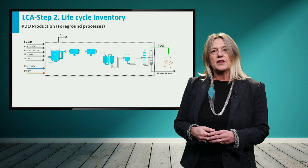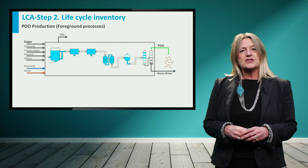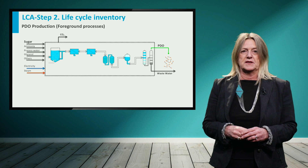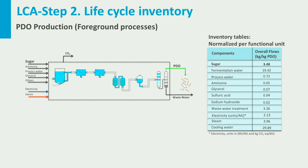For the production process of biobased PDO, we present here the flow sheet, where the corresponding mass and energy flows for each processing unit are determined. Then, based on the mass and energy balances for all inputs and outputs, it is possible to prepare the normalized inventory tables. For example, 3.48 kg of sugars are used per 1 kg of PDO produced. This value refers to the overall input of sugars, which also accounts for non-fermented sugar and for any possible losses occurring through the process.